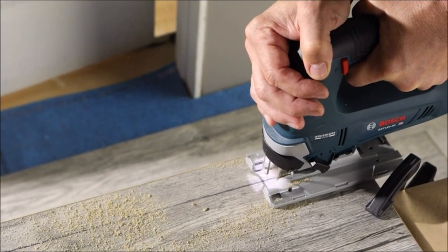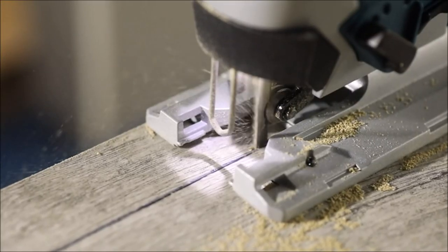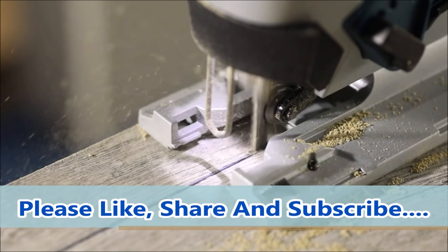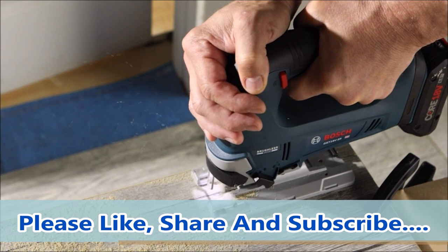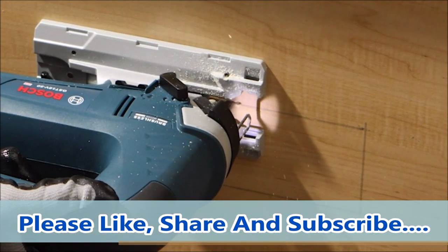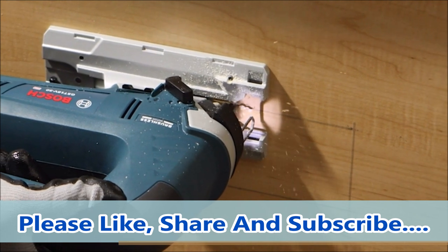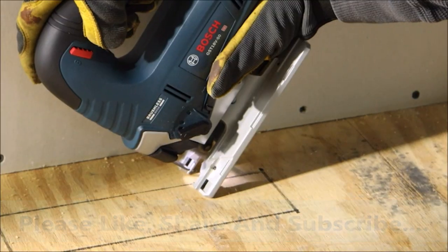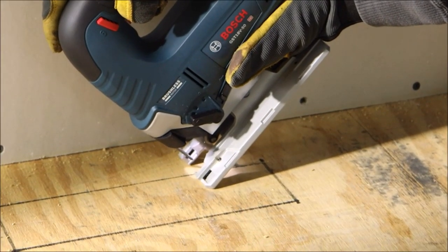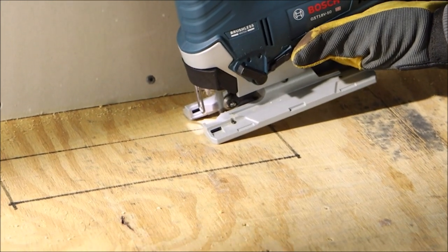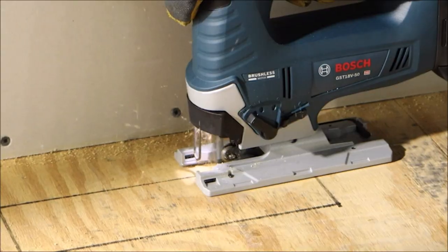It has a variable speed trigger which provides further control over the operating speed by feathering the trigger. The jigsaw has four orbital action settings for cut control. The large die-cast aluminum footplate with no more plastic overshoot helps prevent damage to the workpiece. It is compatible with guide rail and circle adapter. The cut lines stay visible due to the dust blower and LED light. The jigsaw features a tool-free T-shank blade change system.